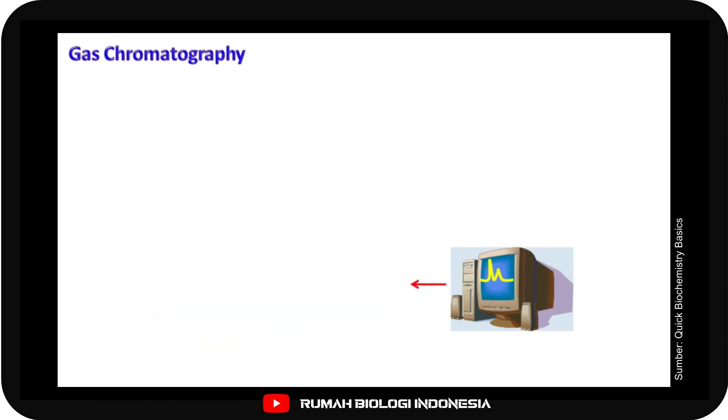When the sample is detected, the computer gives a peak with respect to the retention time of the sample. The area under the peak gives information about the concentration of the sample.